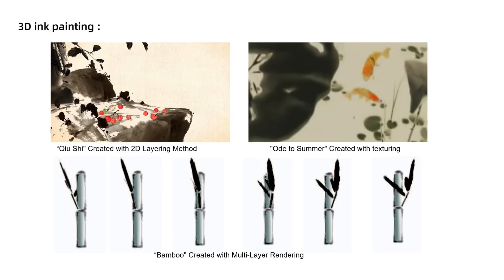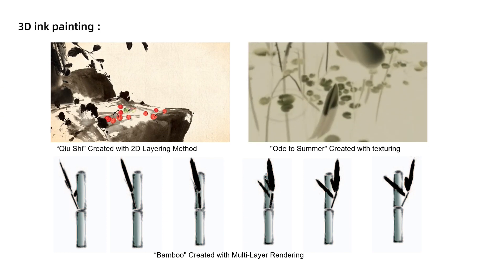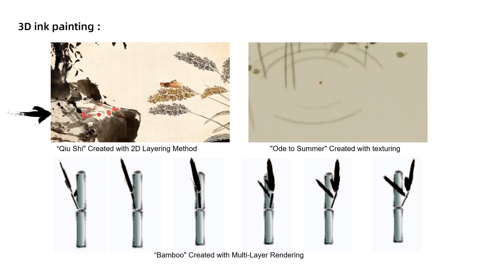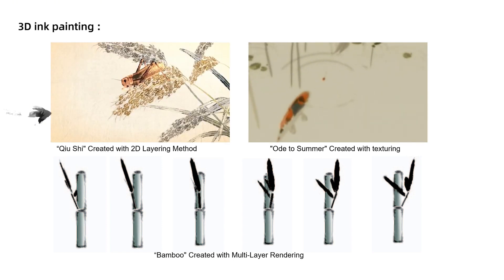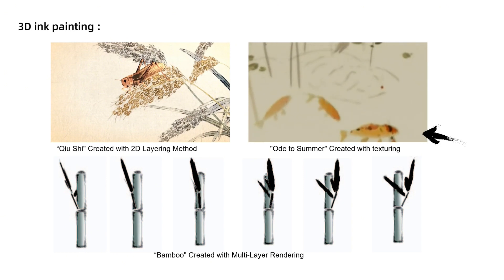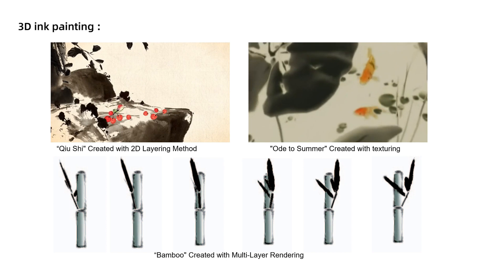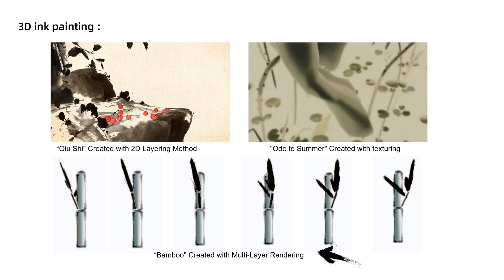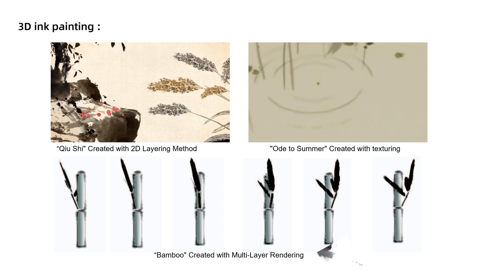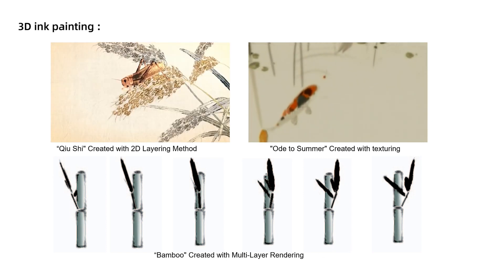Artists use three main methods for 3D ink painting: layering, texture drawing, and model rendering. Layering creates depth with 2D layers, but lacks true 3D perspective. Texture drawing maps 2D ink art to 3D models, but struggles with edge details and 3D stroke effects. Model rendering, or non-photorealistic rendering, converts 3D models into ink-style art, but doesn't support freehand drawing.